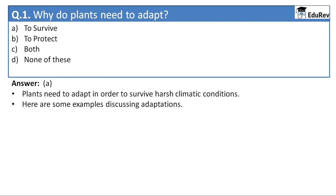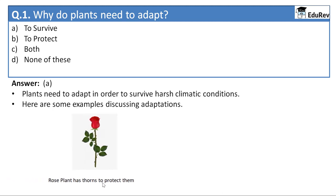Plants need to adapt in order to survive harsh climatic conditions. For example, there is this rose plant. It is very weak but it is having thorns on the stems so that it is protected from the attacks of animals and humans.